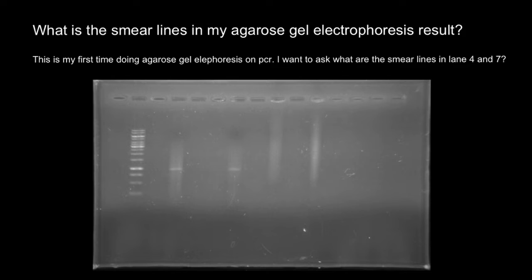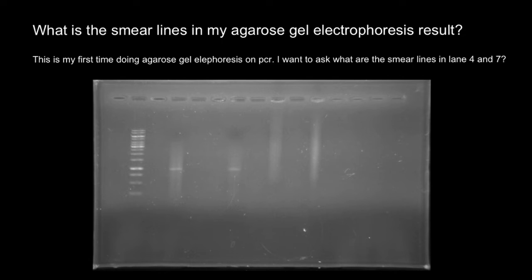Also, it is not very clear whether lane 1 of this gel represents a negative control. If you run a negative control where no DNA template is added, and you also got amplicons or smears, then this may indicate a cross-contamination.